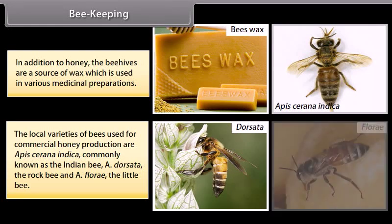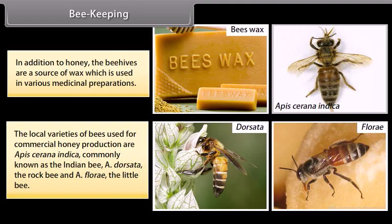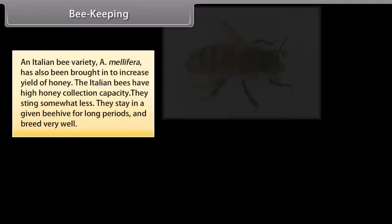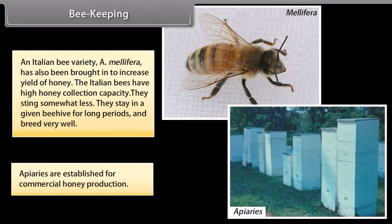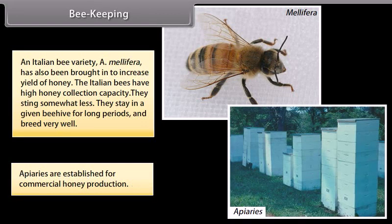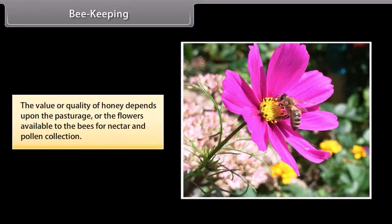Other local bee varieties include A. dorsata, the rock bee, and A. florea, the little bee. An Italian bee variety, A. mellifera, has also been brought in to increase the yield of honey. The Italian bees have high honey collection capacity, stay in a given beehive for long periods and breed very well. Apiaries are established for commercial honey production. The quality of honey depends on the pasturage, or the flowers available to the bees for nectar and pollen collection.